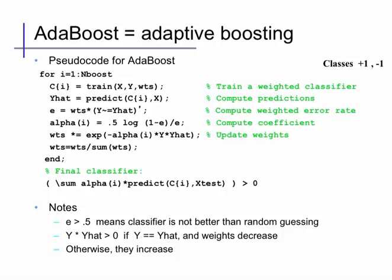So we update the weights, increasing the weights of anything where y is not equal to y_hat and decreasing the weight of things where y does equal y_hat. Then we normalize the weights to sum to one, because we want a normalized collection of weights. We repeat this procedure until we've learned however many classifiers we want, and our final classifier is the weighted sum of our predictions. Since these are plus and minus one, the weighted sum above zero predicts positive one, and below zero predicts negative one.